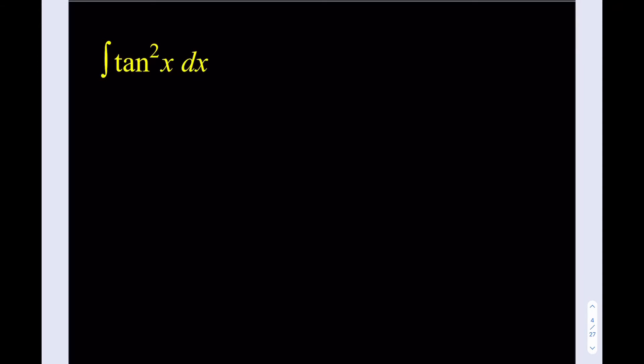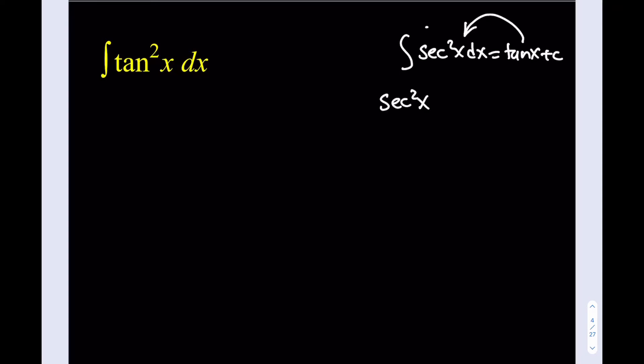Before we get into this problem, let me talk about a couple of facts. First, the integral of secant squared x dx equals tangent x plus c, because the derivative of tangent is secant squared — they're inverse operations. So if I can get a secant squared inside an integral, that would be nice. The relationship is: secant squared equals 1 plus tangent squared.